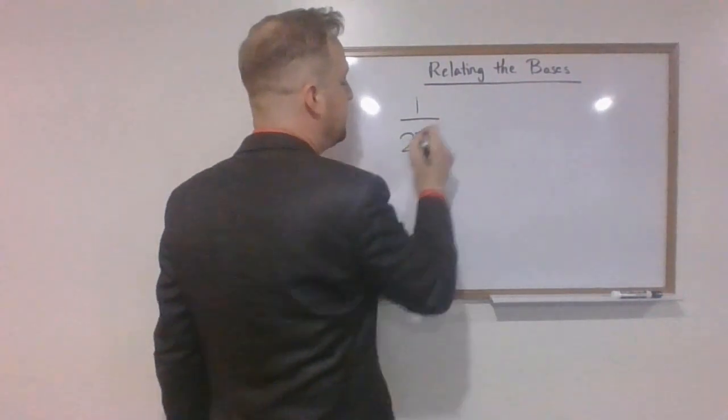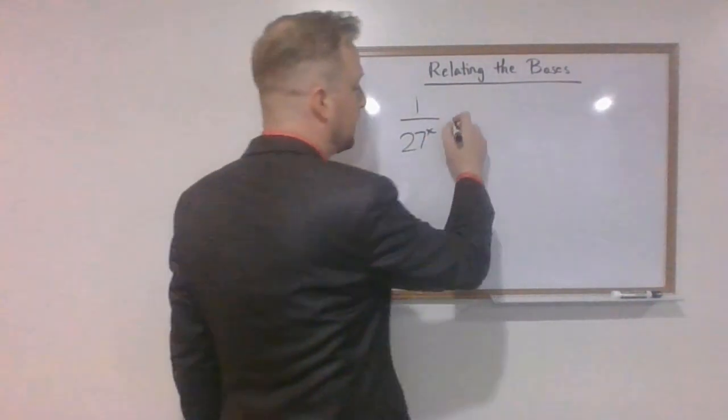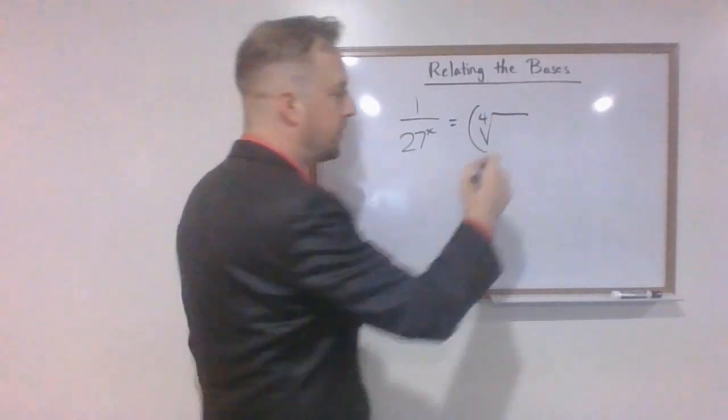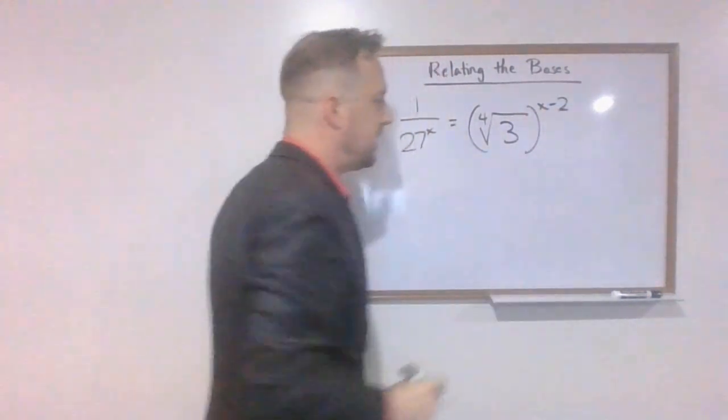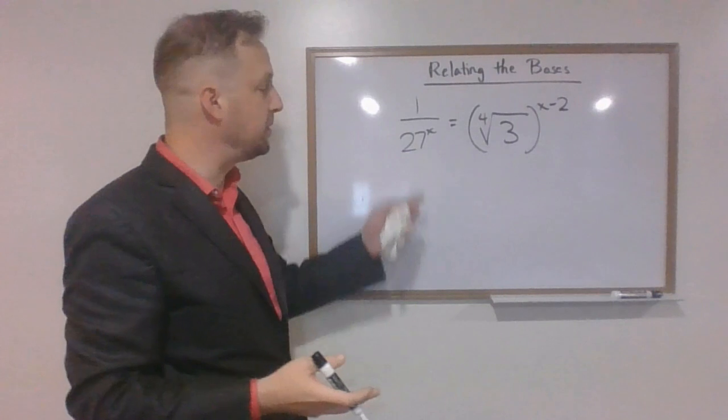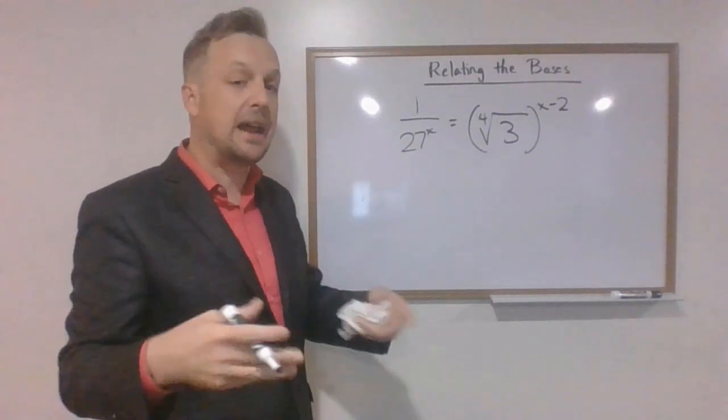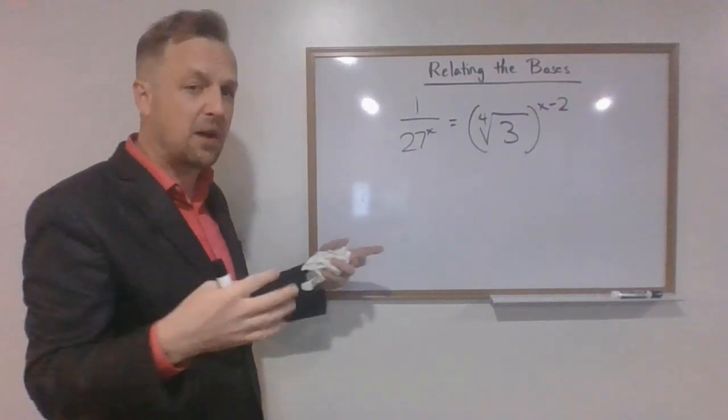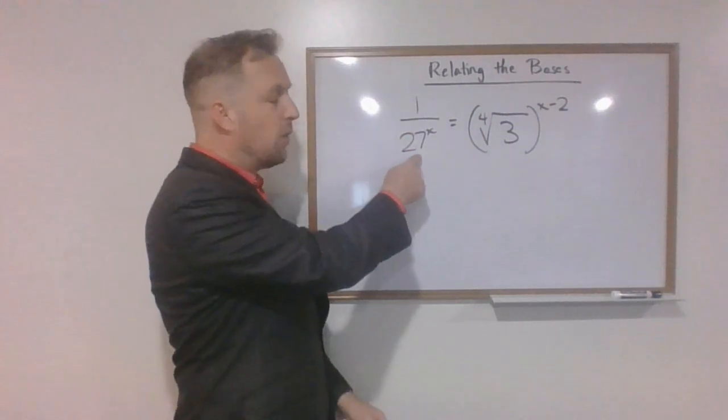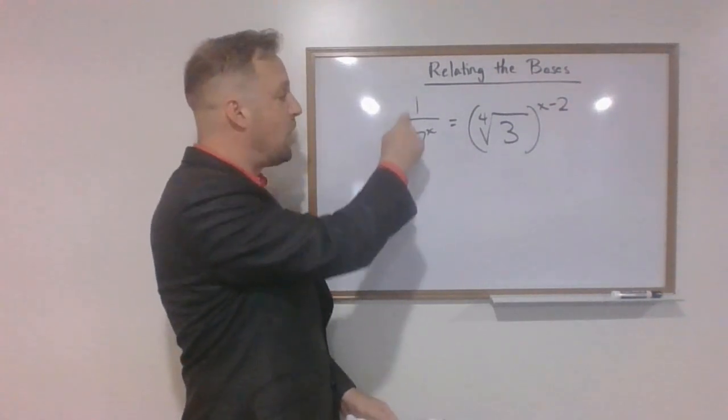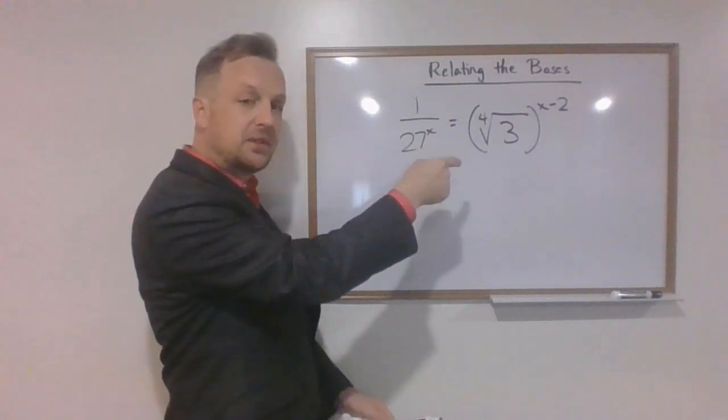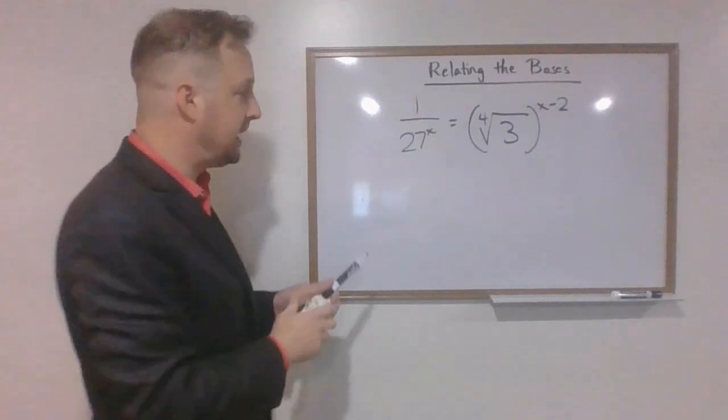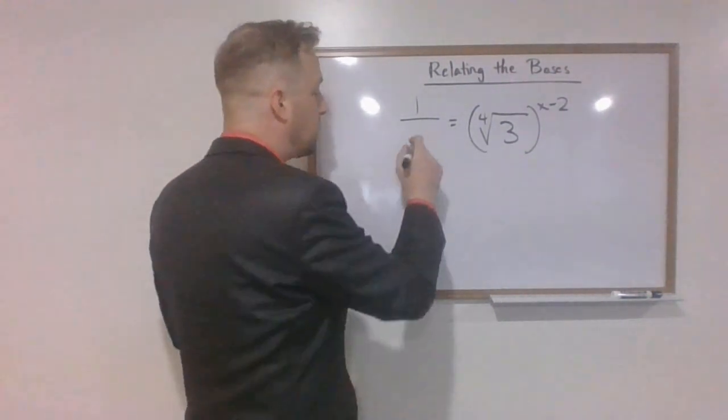Let's take a look at one more. 1 over 27 to the x, and again these come directly from your book, equals the fourth root of 3, all to the x minus 2 power. Now hopefully when you're looking at this you see this 27 and you see this 3 and you go, okay, I got to get these back to 3. So I'm going to go through a bunch of steps here without writing it all out because my board space is limited. Hopefully now this makes sense that you can think of this as 1 over 3 to the 3x, because 27 is 3 to the third. 3 times x gives us 3 to the 3x.